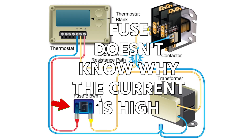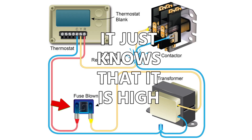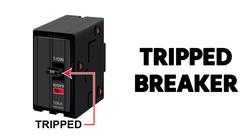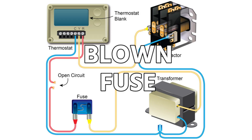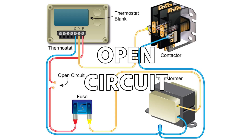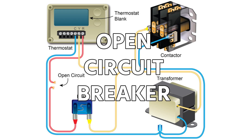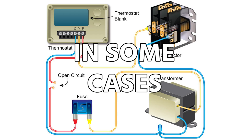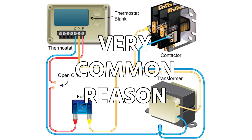A breaker or fuse doesn't know why the current's high — it just knows it is high, and that's why it trips or blows. So when you see a tripped breaker or blown fuse, that is an open circuit because the breaker has tripped or the fuse has blown. But that open circuit happened because of a short circuit in some cases — not all. That's not the only reason a fuse blows or a breaker trips, but it is one very common reason.